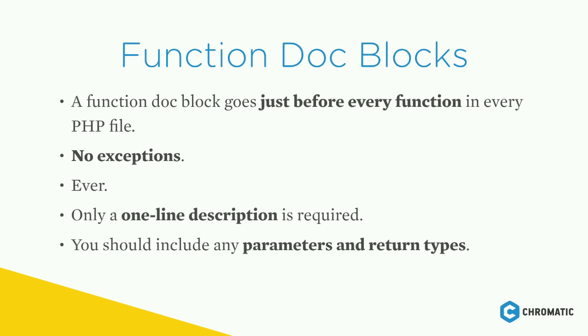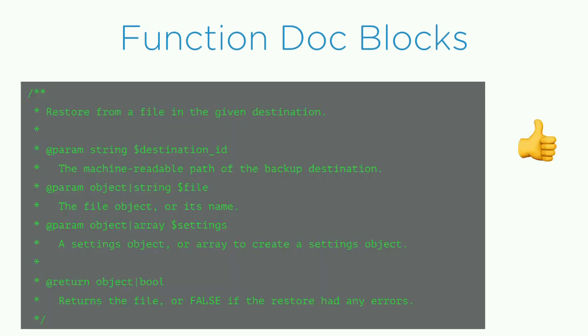A function doc block goes just before every function in every PHP file — no exceptions. Only a one-line description is required, but you should include any parameters and return types. A function doc block with only a one-line summary will pass Coder, but it's lacking important information. Writing out the documentation in as much detail as possible gives you a better understanding of your code. Good documentation can also aid in debugging: if the documentation doesn't match what's happening in the code, you know something's wrong.